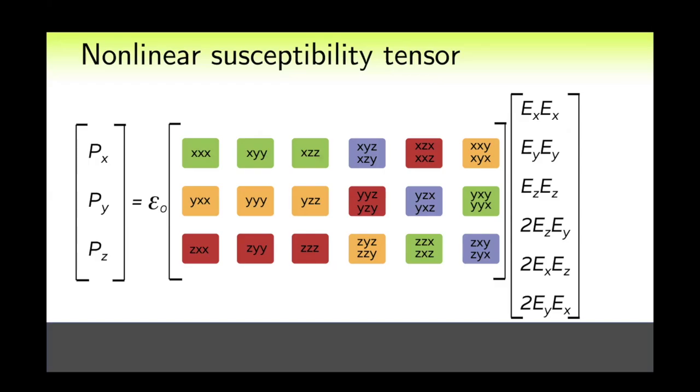This leads us to a simpler notation for the χ^(2) tensor when we combine identical parts of components into one. Such a tensor is written as a 6 by 3 matrix and connects the column in which the corresponding products of the electric field components are written with the polarization along the x, y, and z.